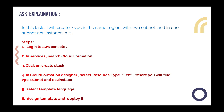Next, select the template language. AWS provides two types of template language: one is JSON and the other is YAML. Then design your template and deploy. Let's now perform the task.